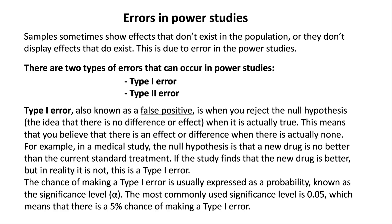Type 1 error, also known as a false positive, is when you reject the null hypothesis — the idea that there is no difference or effect — when it is actually true. This means that you believe there is an effect or difference when there is actually none. For example, in a medical study where the null hypothesis is that a new drug is no better than the current standard treatment, if the study finds the new drug is better but in reality it is not, this is a Type 1 error. The chance of making a Type 1 error is expressed as the significance level, alpha. The most commonly used significance level is 0.05, meaning there is a 5% chance of making a Type 1 error.